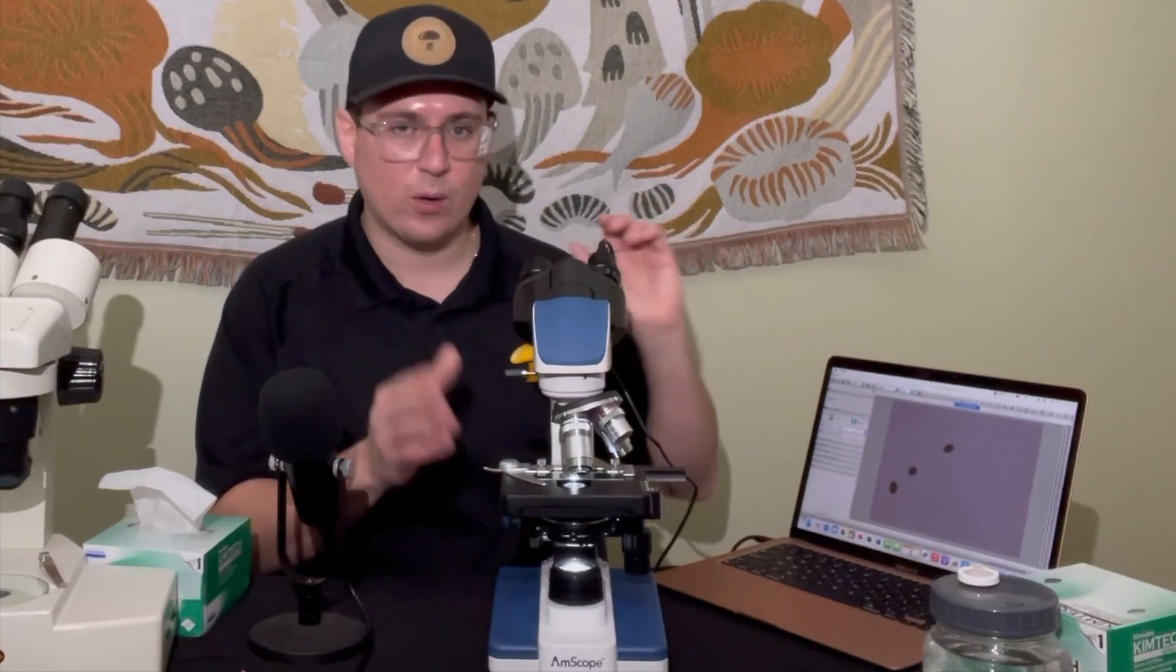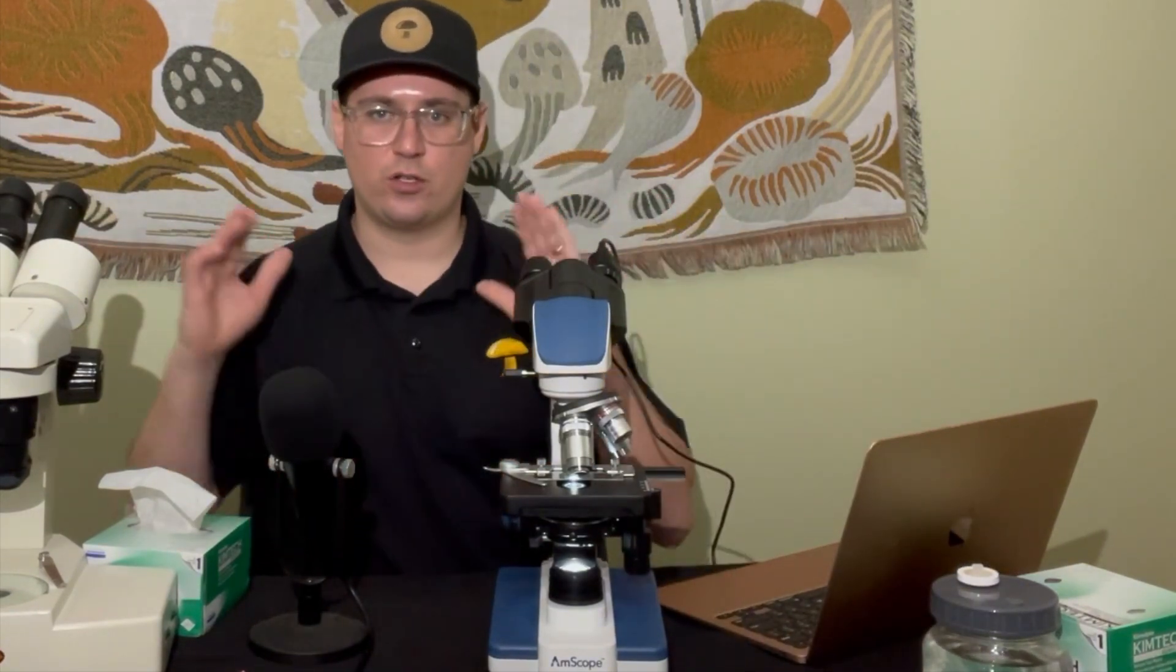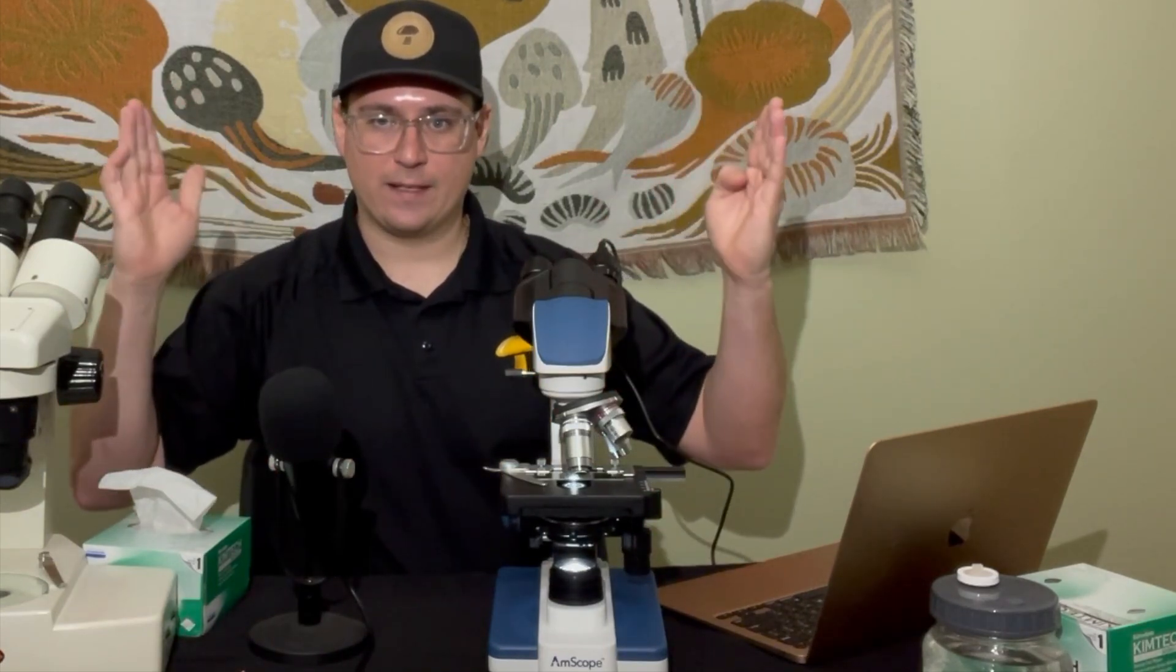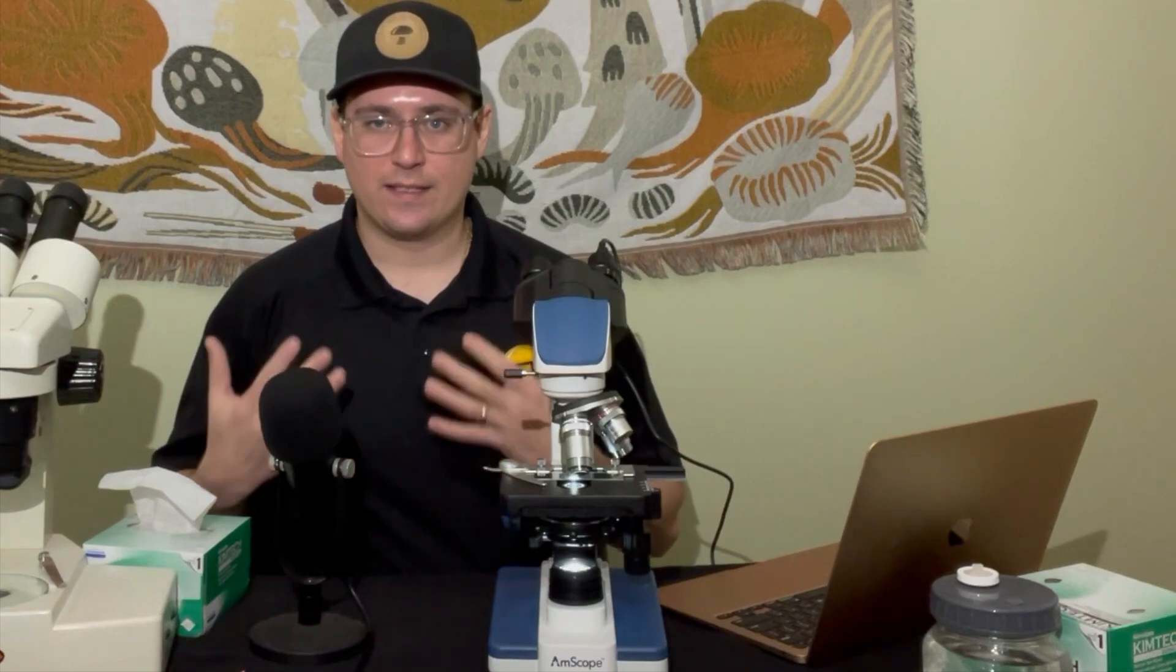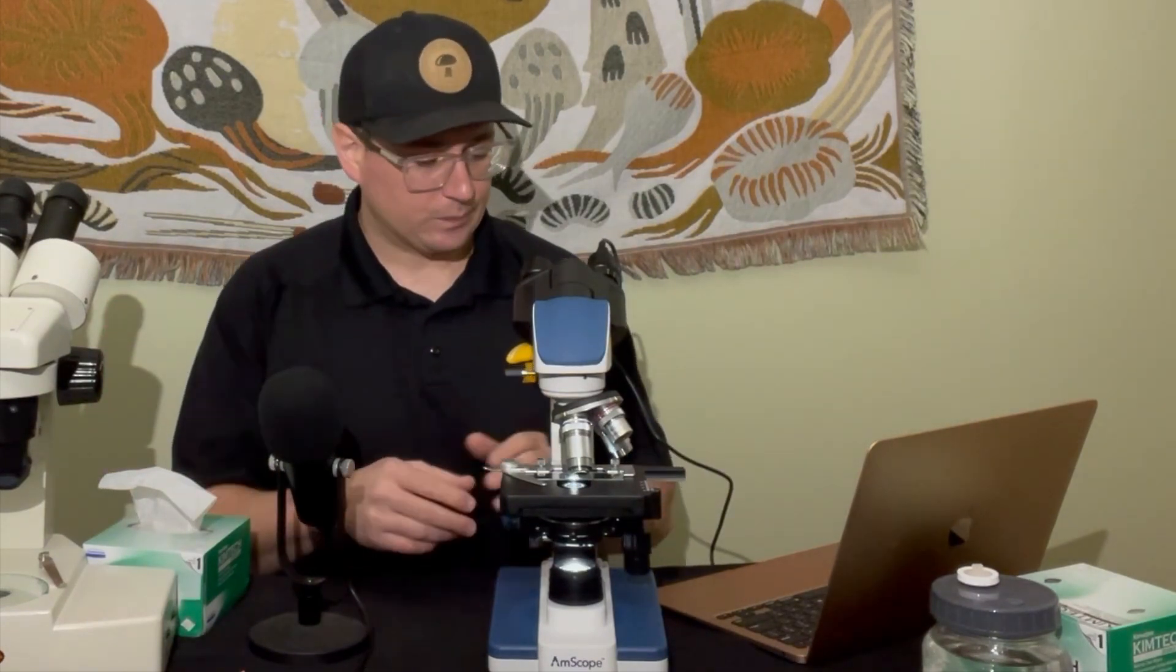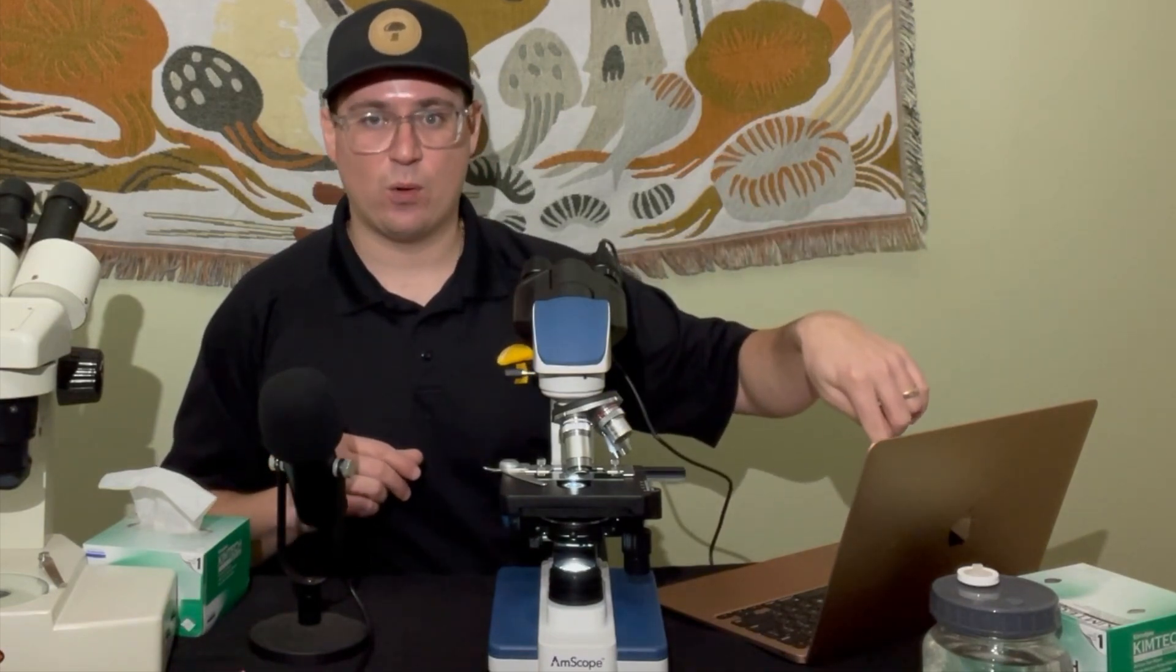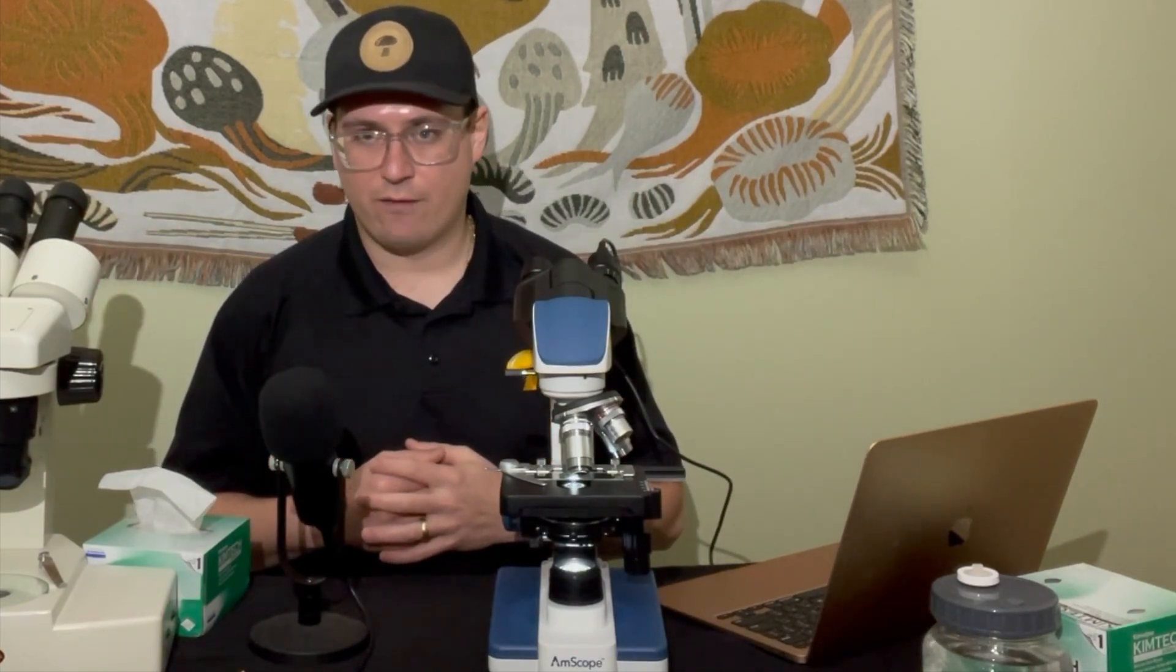So you can see we've got a spore kind of like oblong shape, but we're going to go ahead and use the software to draw a line of the field of view and then we're going to draw a line on the spore itself. Then we're going to do the ratio of the pixels from the field of view compared to the pixels of the line of the spore, and then we're going to figure out the size of the spore using the pixels on the camera, which is a really accurate method.